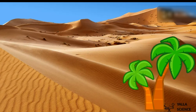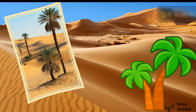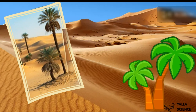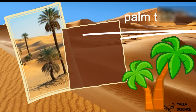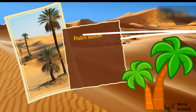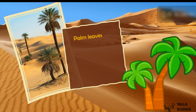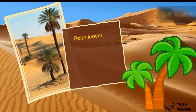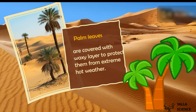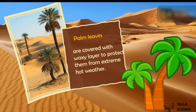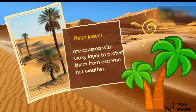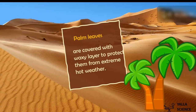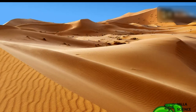This is the most common tree in the desert — it's the palm tree. The palm tree also protects the soil from hot temperatures in the desert. Its leaves are covered with a waxy layer to protect them from extreme hot weather.